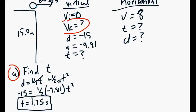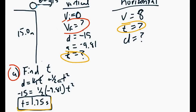Let's solve a few parts of this question. First, we often have to solve for time, because time is the same for both horizontal and vertical. We'll use the vertical information since we don't have enough horizontal information. Using initial velocity of 0, distance of negative 15, and acceleration of 9.81 in the formula d = v_i·t + ½·a·t², we get a time of approximately 1.75 seconds.